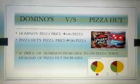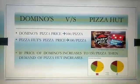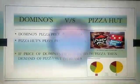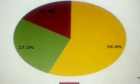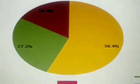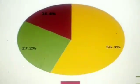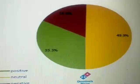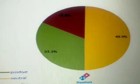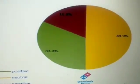We can see the pie chart right down here. This is a pie chart of Pizza Hut and Domino's showing the reviews. The yellow one is neutral, the green one is positive, and the red one is negative views.